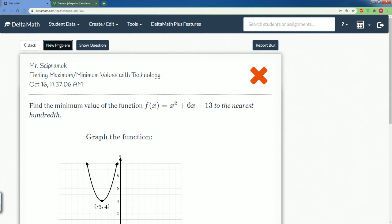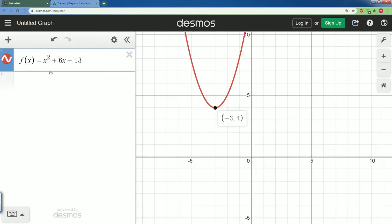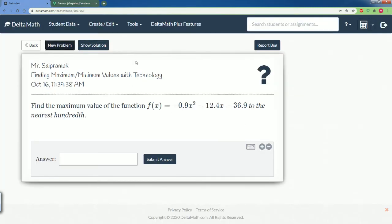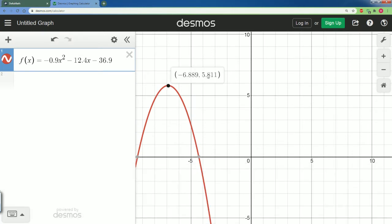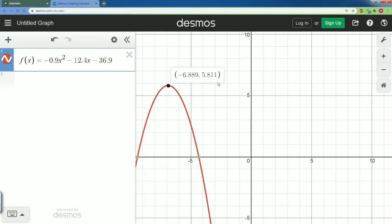So let's enter this into the calculator: f of x is equal to negative 0.9x squared minus 12.4x minus 36.9. Let's make sure we enter that correctly. So negative 0.9x squared minus 12.4x minus 36.9. All right, we hit this value and it is 5, and again when we were looking for the minimum or maximum here they just want the y value.